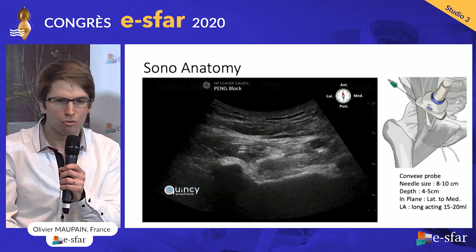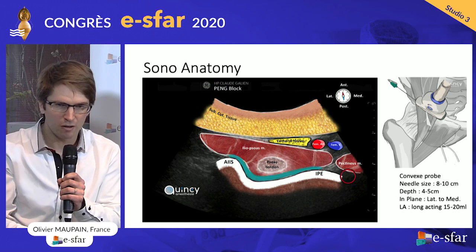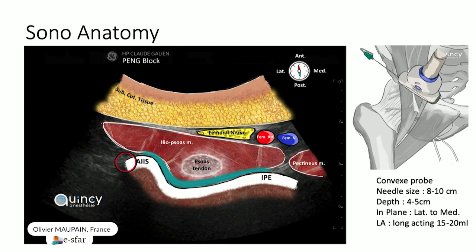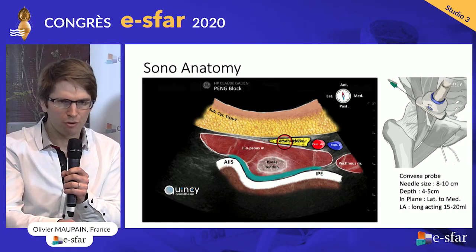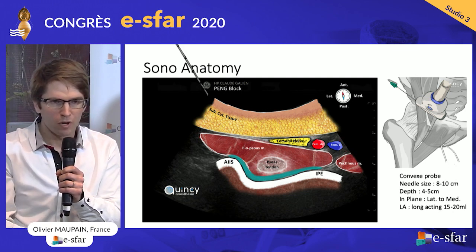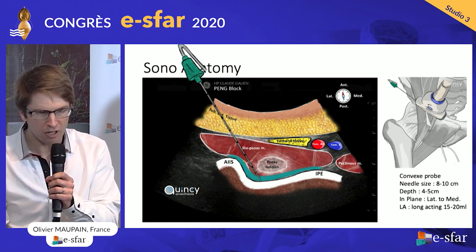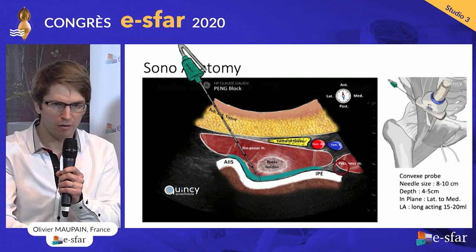Now you are familiar with the anatomic landmarks of the region. In depth you have the bony landmarks with two hills and one valley. Laterally we have the anterior inferior iliac spine, and medially the iliopubic eminence. Just anterior to it, we have the iliopsoas muscle with a remarkable landmark — the psoas tendon — with its round shape. Superficially, you have the femoral nerve and femoral vessels, and this is a dangerous zone you need to avoid. When you put your needle to perform a PENG block, you come from the lateral part of the probe in-plane, and the aim is to go to this bony valley.